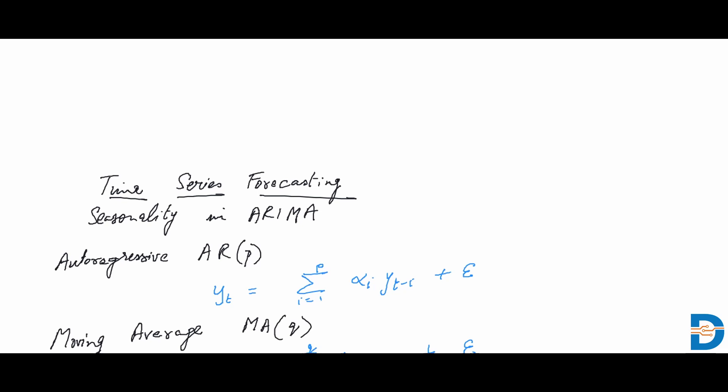we talk about an auto regressive model and describe the order which is p, and that is essentially referring to p number of lags that we can have as part of defining a predicted value at time t, that is given by yt.